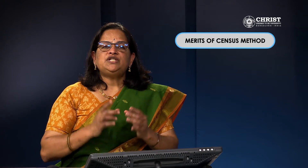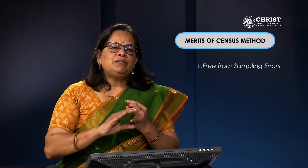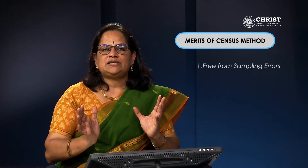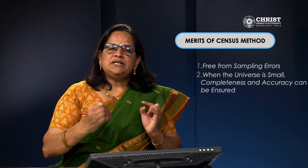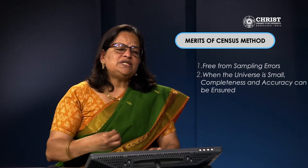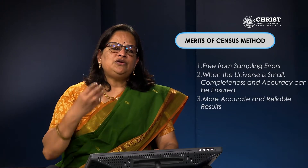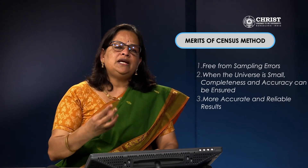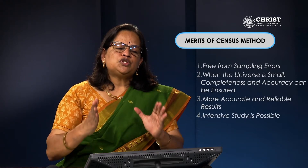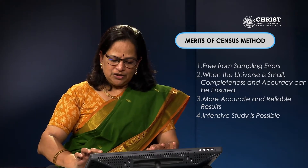Now, merits of census method. First, it is free from sampling errors. Since we are collecting information from all respondents, there will be no question of sampling errors. When the universe is small, completeness and accuracy can be ensured. You can collect as much information as possible from all respondents and do a detailed survey. Results are more accurate and reliable since you are meeting respondents directly. Intensive study is also possible, as you can collect additional information.